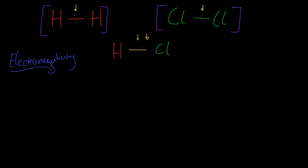What is electronegativity? It is defined as the ability of an atom to draw towards it the bonding pair of electrons. So in this example, it is the ability of chlorine to draw towards it the electrons in the covalent bond.